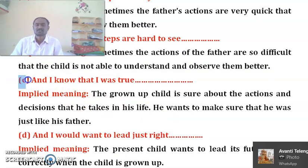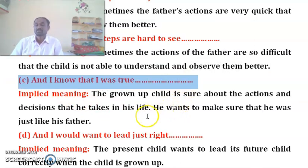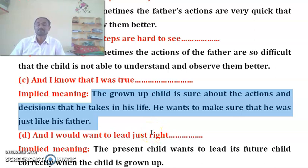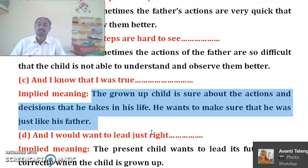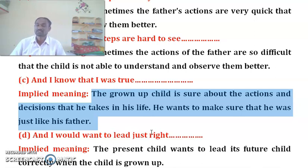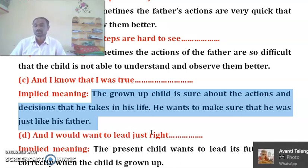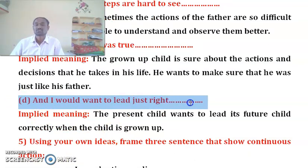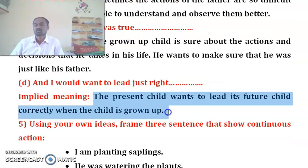Next, line C: 'And I know that I was true' — the implied meaning is that the grown-up child is sure about the actions and decisions he takes in his life, and he wants to make sure he was just like his father. Line D: 'And I would want to lead just right' — implied meaning: the present child wants to lead its future child correctly when the child is grown up.